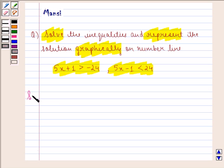Here we are given two inequalities. They are 5x + 1 is strictly greater than -24, and 5x - 1 is strictly less than 24.